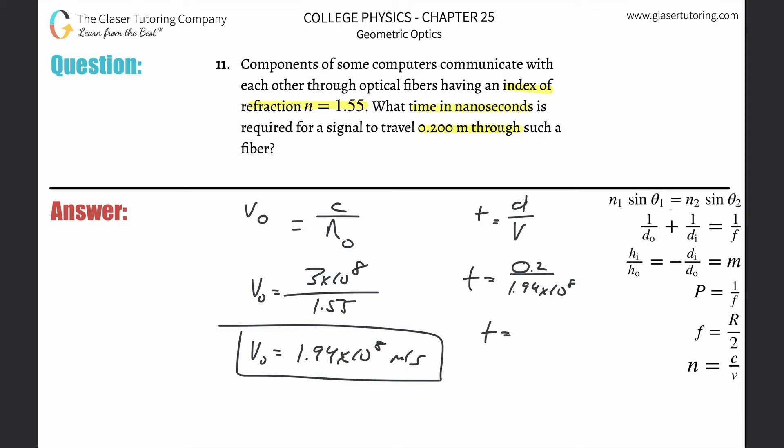Let's find the time. This is going to be 0.2 divided by that exact answer. So that's about 1.03 times 10 to the minus ninth seconds, or 1.03 nanoseconds.